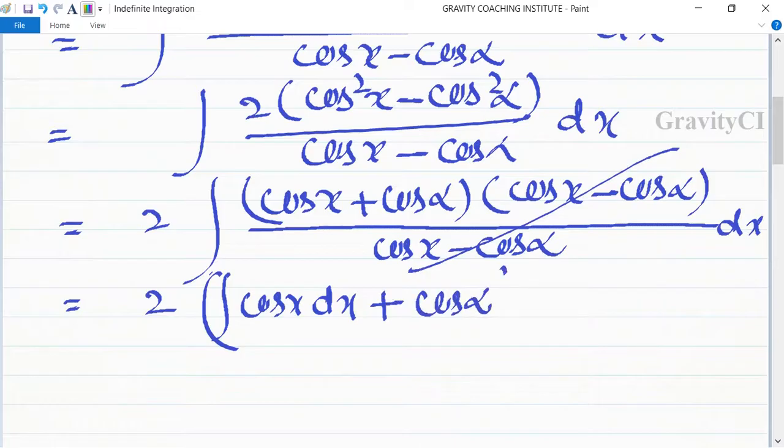If cos alpha is constant, I will take the integration to be 2 integral of cos x plus cos alpha dx.